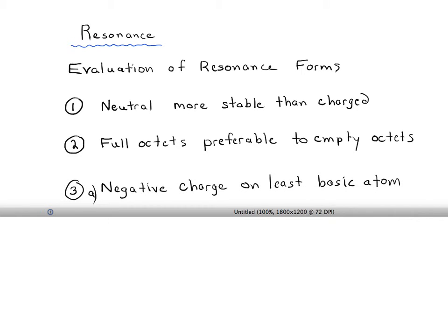If you have a negative charge that you cannot neutralize, if you have a resonance form with a negative charge, it's best to place it on the least basic atom. The least basic atom is going to stabilize the negative charge the most.